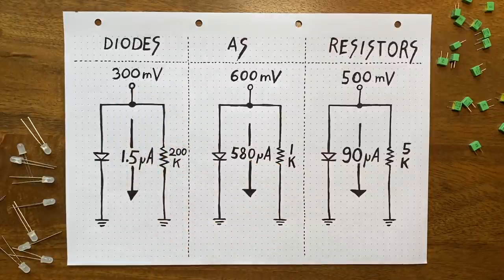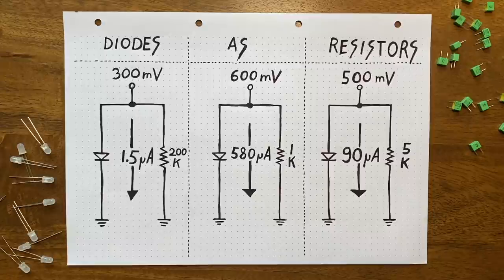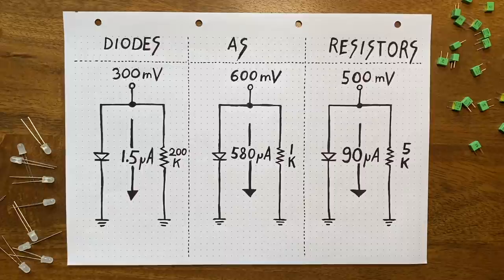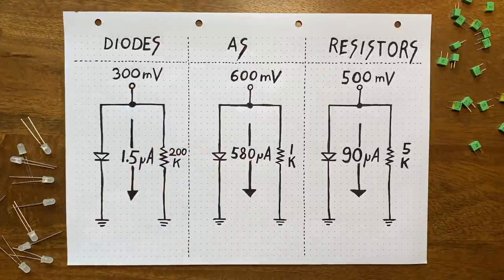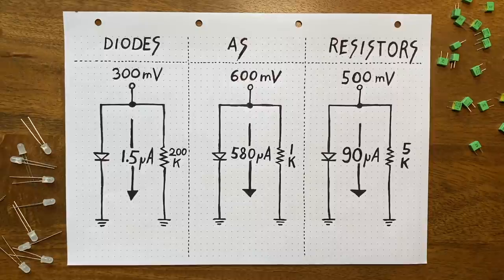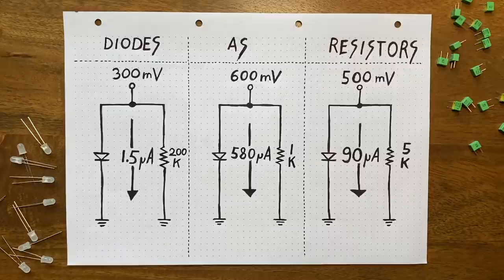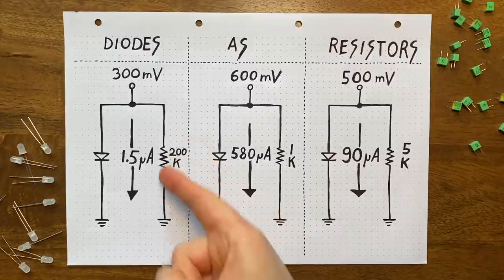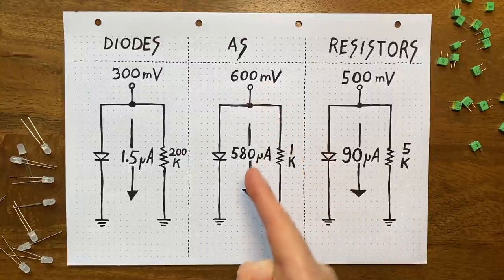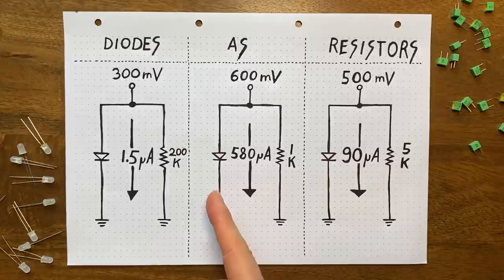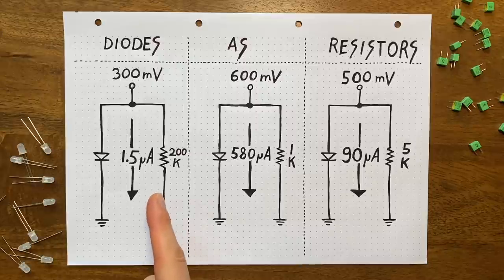Which makes it safe to assume that under these specific circumstances, our diode will behave just like a 200k resistor. Note that the emphasis here is on these specific circumstances. Because as soon as we increase or decrease the voltage up here, the comparison falls apart completely. For the resistor, a doubling in voltage will see a doubling in current. So at 600 millivolts, there'd be 3 microamps flowing. But with our diode, the increase in current will actually be exponential. So, at 600 millivolts input voltage, there'll be 580 microamps going through our circuit. That's 386 times more current.